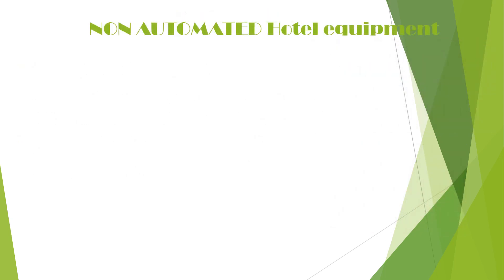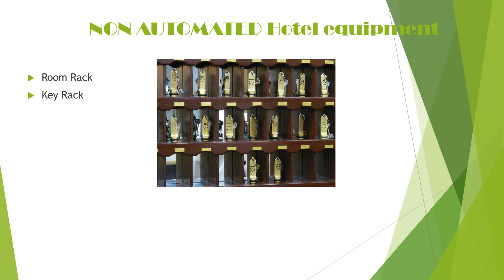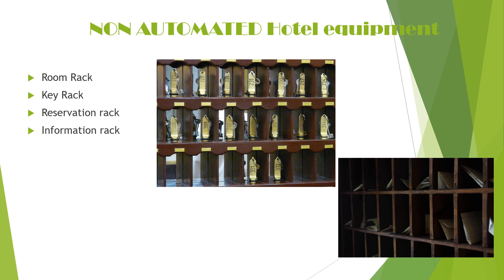Some of the non-automated hotel equipment includes room rack, key rack, reservation rack, and information rack. Both room rack and key rack are used by the front office department at the front desk area and in the back area such as the reservation area. Other non-automated equipment includes folio tray, voucher rack, and arrival bucket. Various arrivals are placed in the arrival bucket, different types of vouchers are kept in the voucher rack, and guest folios are kept in the folio tray.